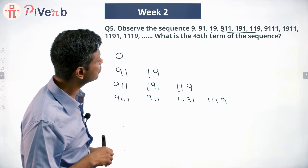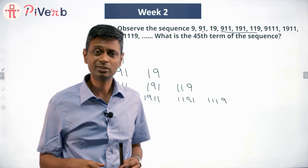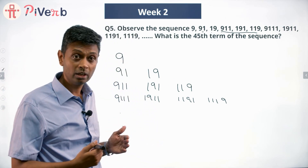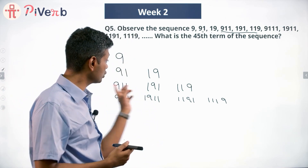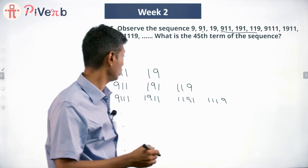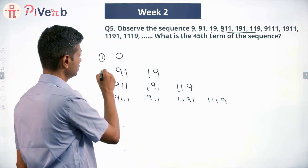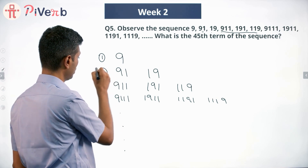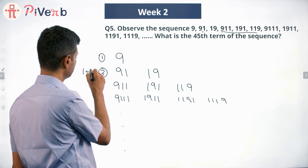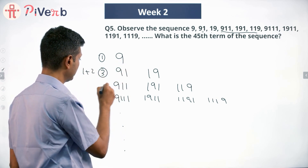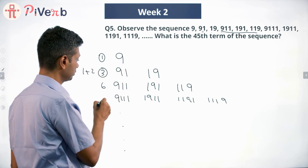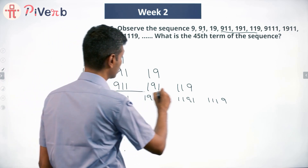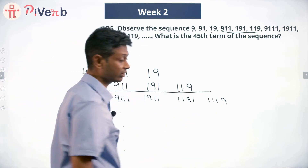We want to find the 45th term of this sequence. For questions like these, I like counting till the end of each row. The first row has one number. Second row: 1 plus 2 = 3. Third row: 1 plus 2 plus 3 = 6. So at the end of the third row, we have accounted for 6 numbers.